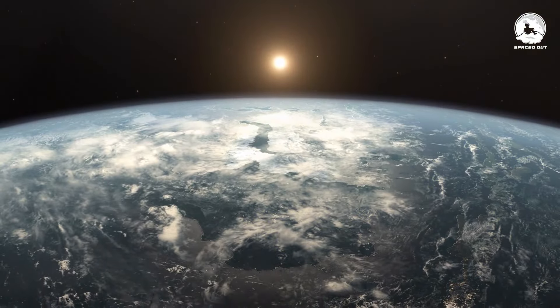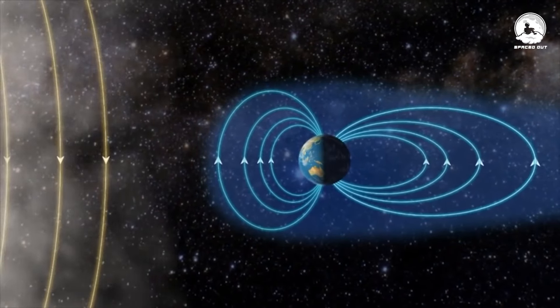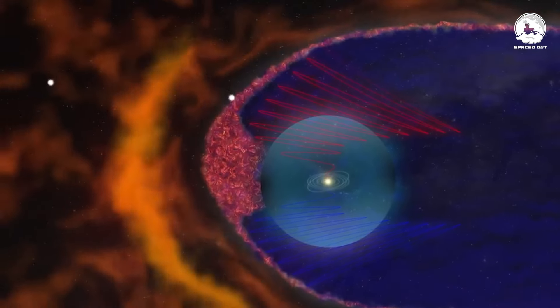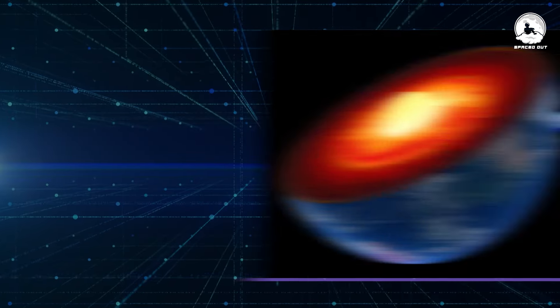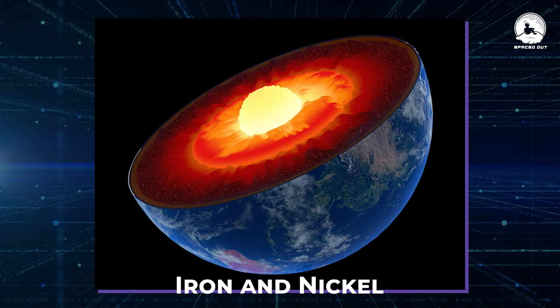This event is crucial for our planet's safety, as the Earth's magnetic field acts as a protective shield against solar winds and cosmic radiation that could otherwise harm our atmosphere and life on Earth. To understand how this works, we need to explore the Earth's core, which consists of a solid inner core and a fluid outer core, primarily made up of iron and nickel.